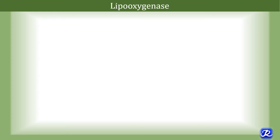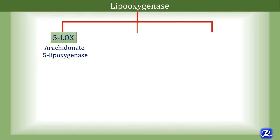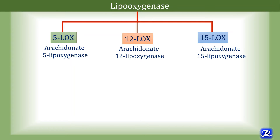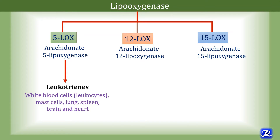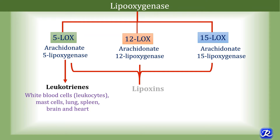There are three isoforms of lipoxygenase: 5-LOX (arachidonate 5-lipoxygenase), 12-LOX (arachidonate 12-lipoxygenase), and 15-LOX (arachidonate 15-lipoxygenase). 5-lipoxygenase is involved in the synthesis of leukotrienes, and this synthesis mainly occurs in white blood cells, also called leukocytes — from which the name leukotrienes is derived. Leukotriene synthesis also occurs in mast cells, lungs, spleen, brain and heart. 12-LOX and 15-LOX are mainly involved in the synthesis of lipoxins, but lipoxins are also derived from leukotrienes, so ultimately lipoxin synthesis involves all three isoforms: 5, 12 and 15.